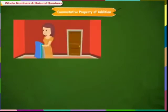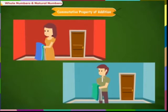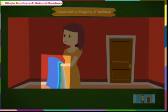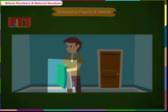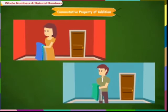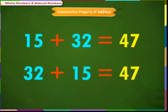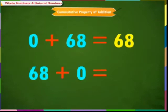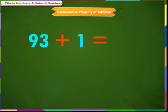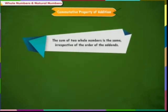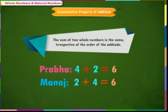Now commutative property of addition. Prabha and Manoj were putting wallpapers for decorating their rooms. Prabha has 4 blue patterns and 2 green patterns, whereas Manoj has 4 green patterns and 2 blue patterns. They both want to put all the wallpaper pieces on the wall. Observe that the sum of both whole numbers is the same irrespective of their order. For example, 93 plus 1 equals 94, and 1 plus 93 also equals 94. Thus Prabha and Manoj put the same number of wallpaper pieces on the wall.